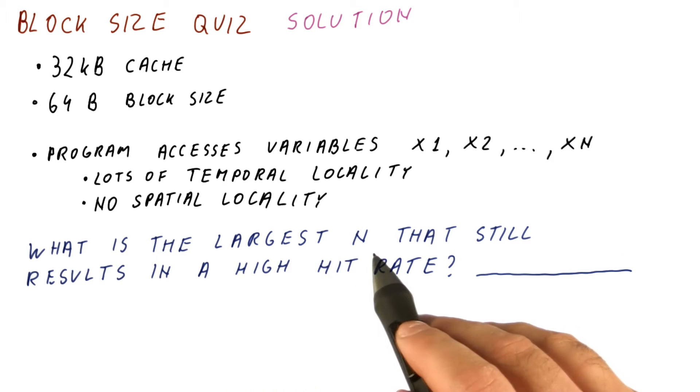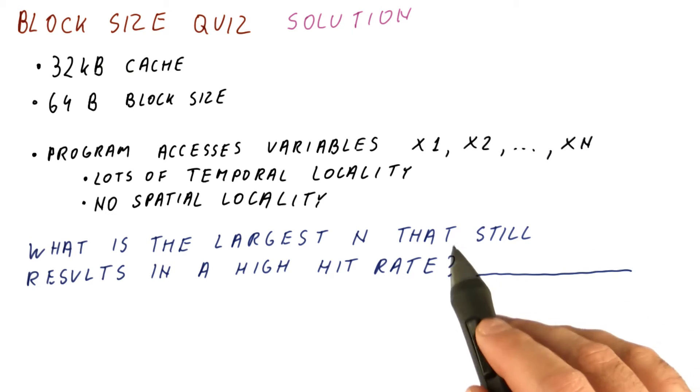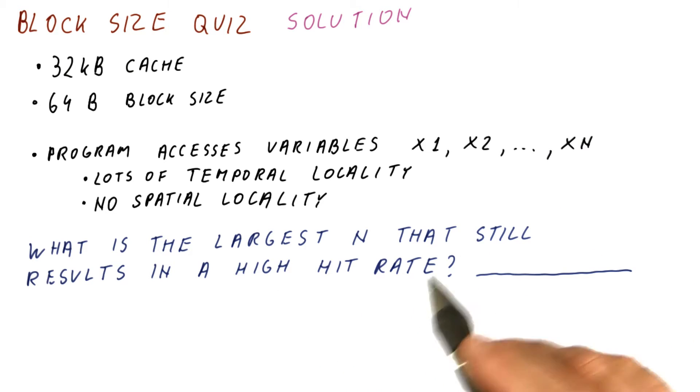The question is what is the largest N, the number of these variables, that still results in a high hit rate?